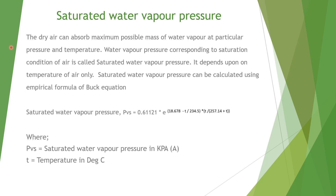Saturated water vapor pressure can be calculated using the empirical Buck equation. PVS equals 0.61121 times e to the power of (18.687 minus T divided by 234.5) times (T divided by 257.14 plus T), where PVS is the saturated water vapor pressure in kiloPascal absolute and T is temperature in degrees Celsius.